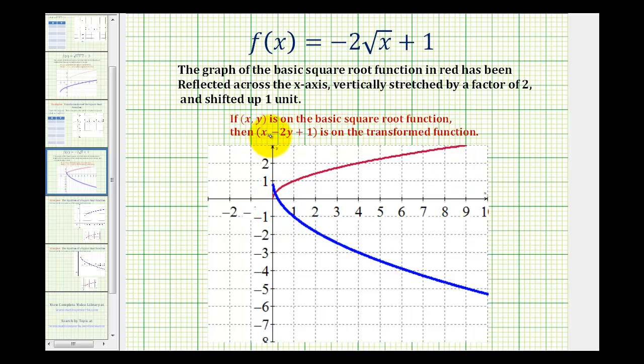So if we say the point x, y is on the basic square root function in red, then the point with an x-coordinate of x, comma, negative two y plus one would be on the transformed function.